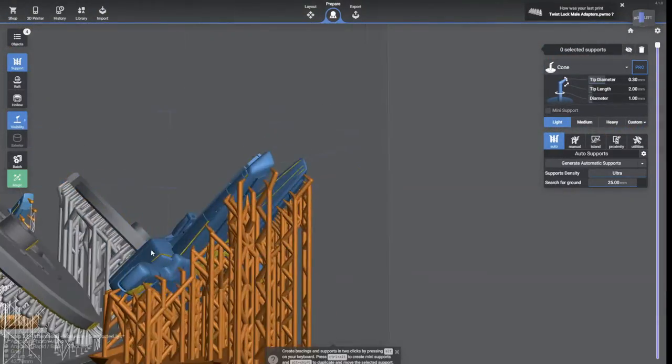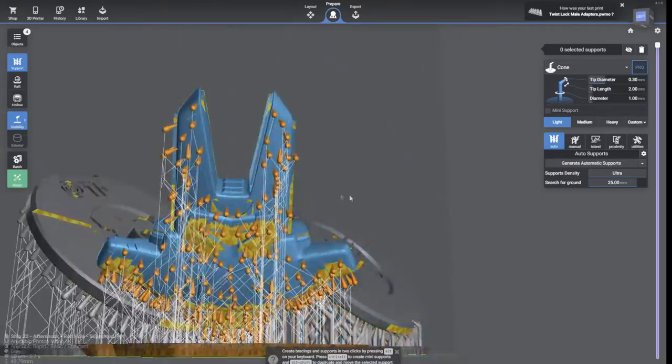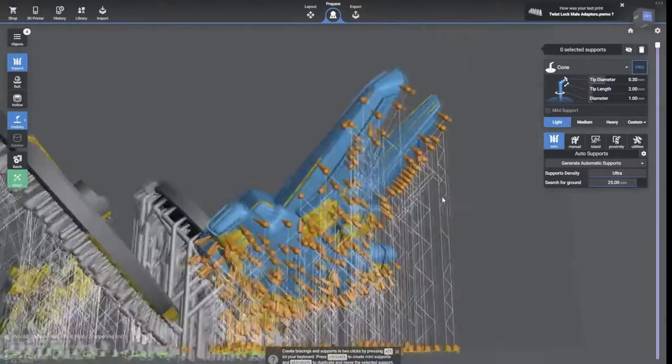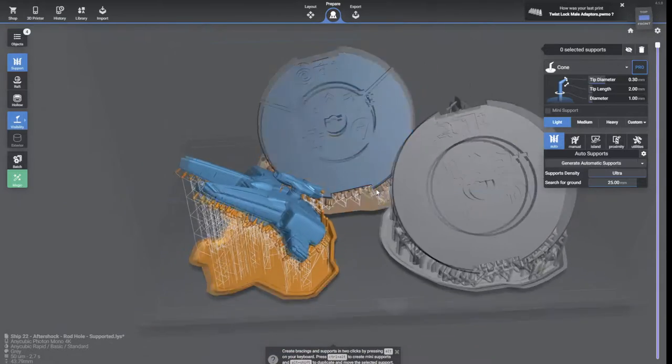I usually support my models at a 45 degree angle. That tends to be the optimal angle for both stability of the print and higher quality. Supporting and slicing can be kind of complicated.